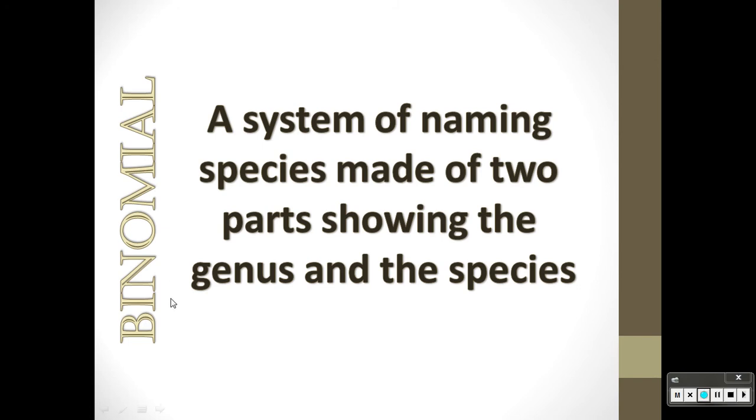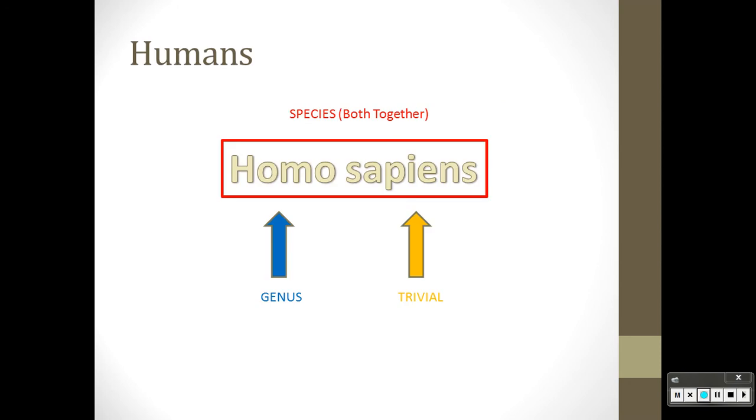The first name is your genus name, so Homo would be the genus for humans. Then your second name would be your trivial name, which is also the name of the species, but you have to say both parts together to actually call it a species.